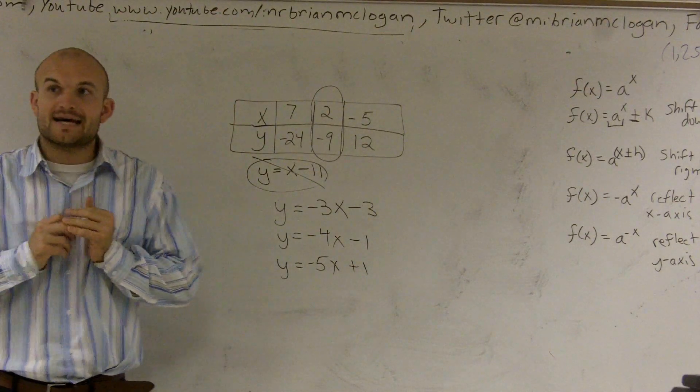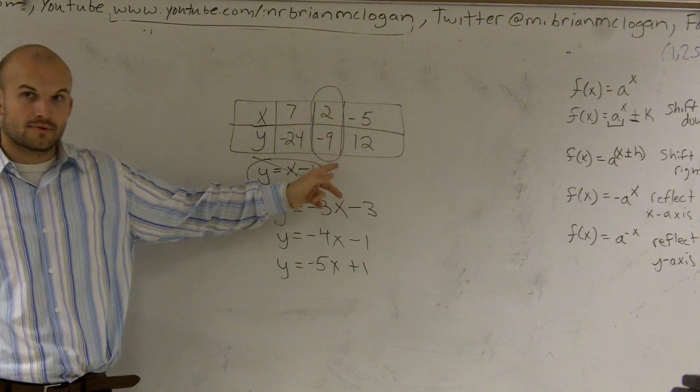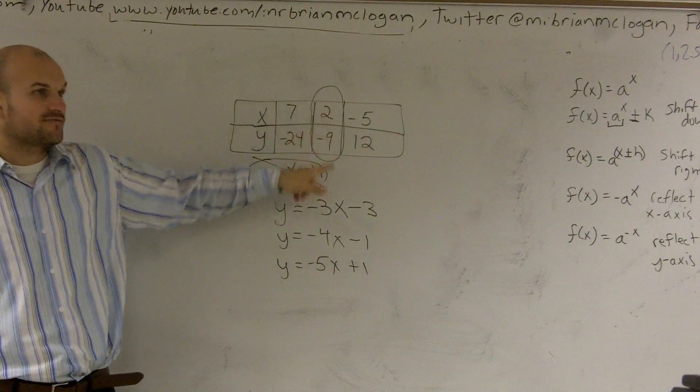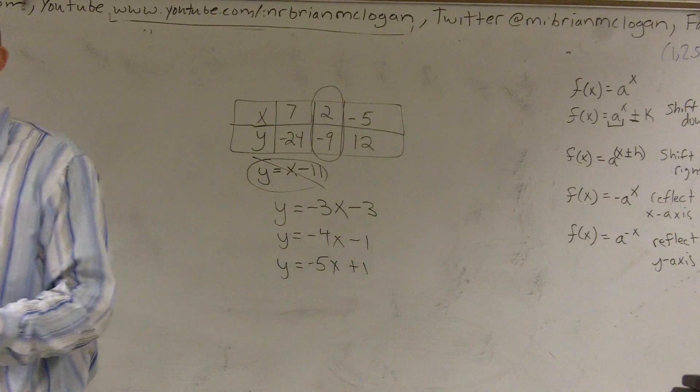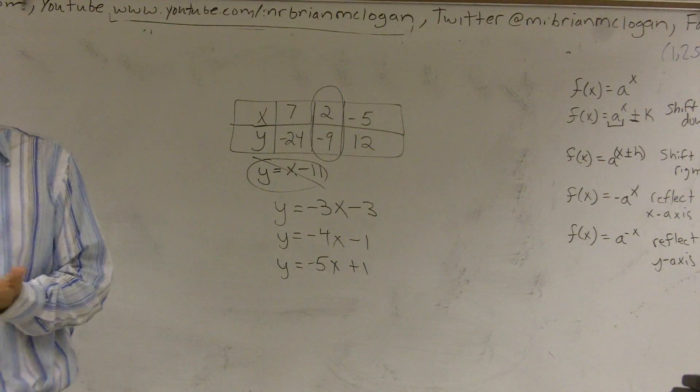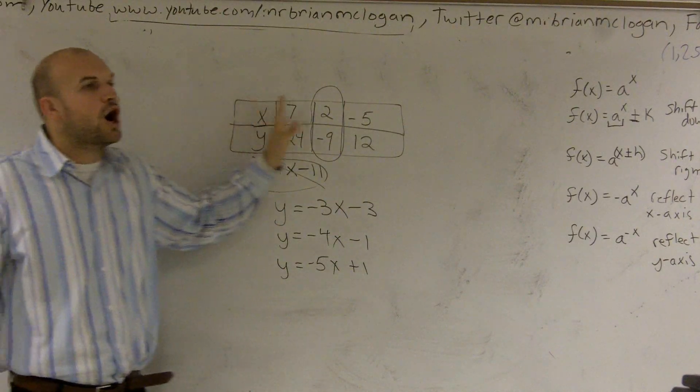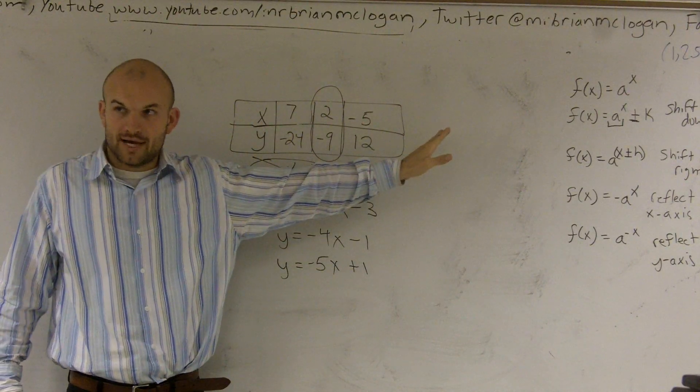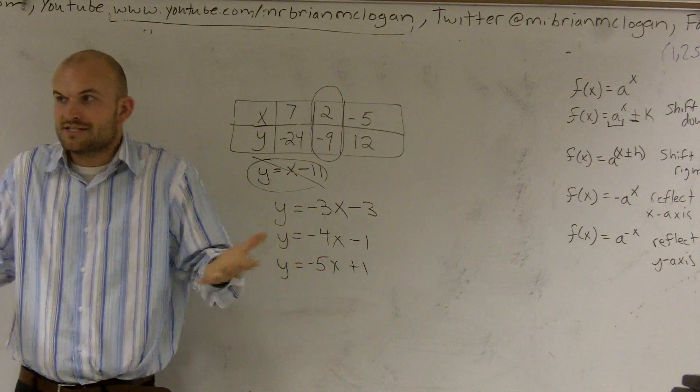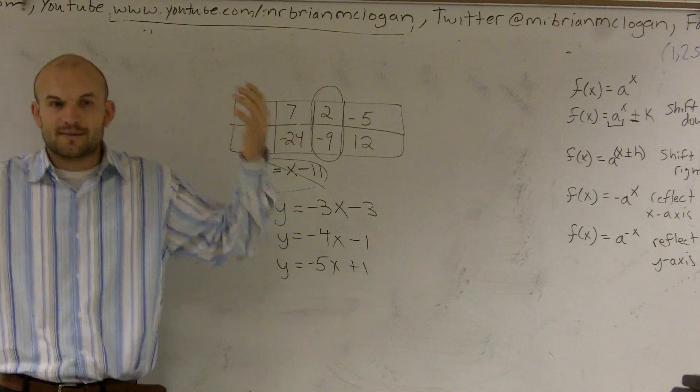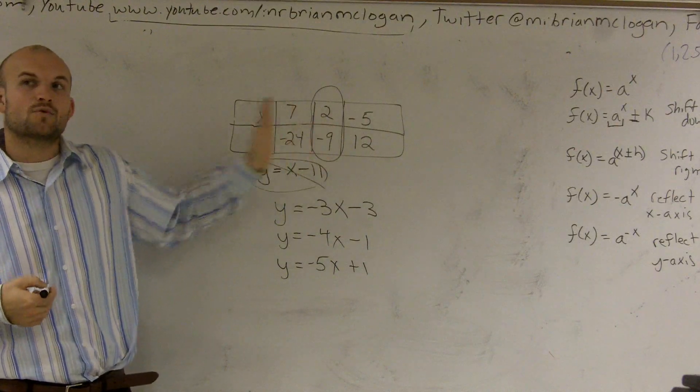So what I just did is I just created three relationships that work for this term. These all are true for this value. But remember, when you're writing a rule, you don't want to write a rule for one value. Your value has to be true for all of them. So we did it just for this middle one, because you've got to get started. You've got to start somewhere. You just can't imagine, poof, here it comes. Get started somewhere. Find a rule for one of them, and then see if it works for the rest of them.